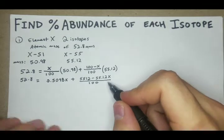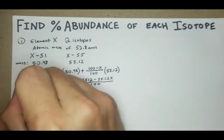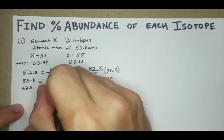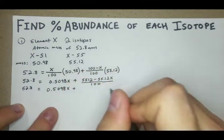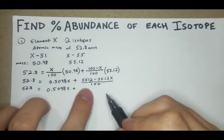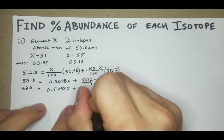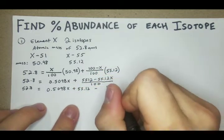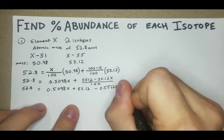We could have done it the quick way there, but just in case, I figured I'd show it out that way. So 0.5098X plus, we'll divide each of these by 100, we're going to have 55.12 minus 0.5512X.